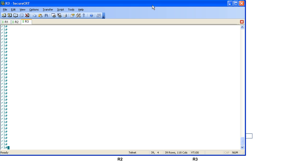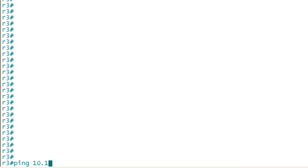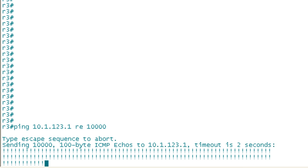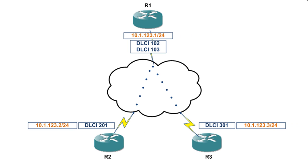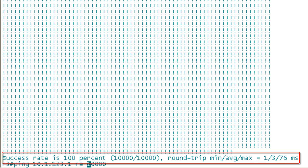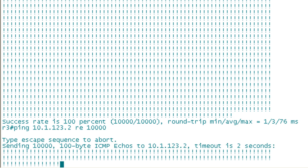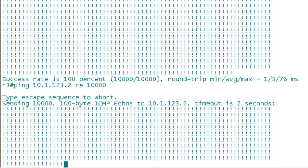Let's go ahead and pop over to R3. What I'm going to do here is ping the hub, 10.1.123.1, and I'm going to send 10,000 pings. While it's thinking, let's go back over to the diagram. So right now we're pinging from R3 to R1 — sending 10,000 pings that way. Next we're going to ping from R3 to R2, and remember that any spoke-to-spoke communication on a hub-and-spoke network will have to go through the hub. Can you guess what the difference in behavior is going to be?